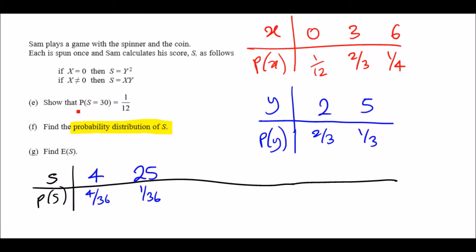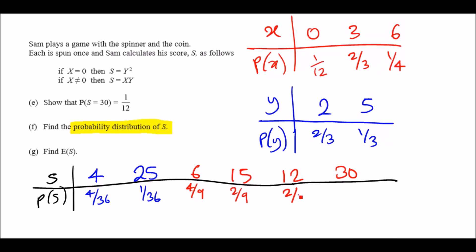Second condition — when X does not equal zero, S equals X times Y. The combinations are: 3×2 = 6, 3×5 = 15, 6×2 = 12, and 6×5 = 30. Their probabilities are: P(S=6) = 2/3 × 2/3 = 4/9, P(S=15) = 2/3 × 1/3 = 2/9, P(S=12) = 1/4 × 2/3 = 2/12, and P(S=30) = 1/4 × 1/3 = 1/12.